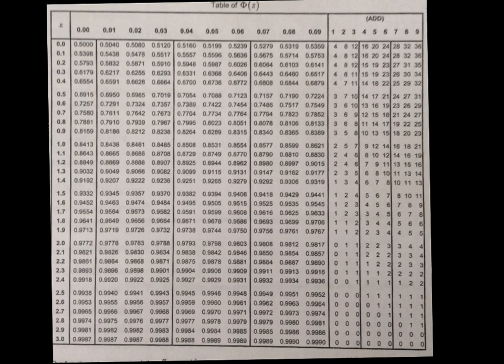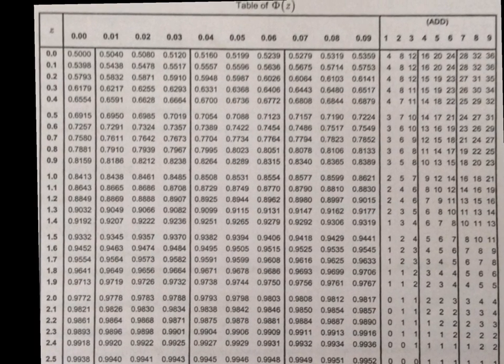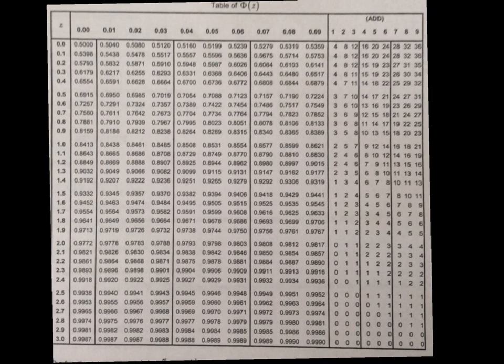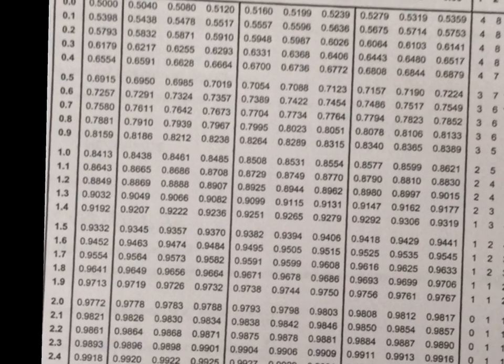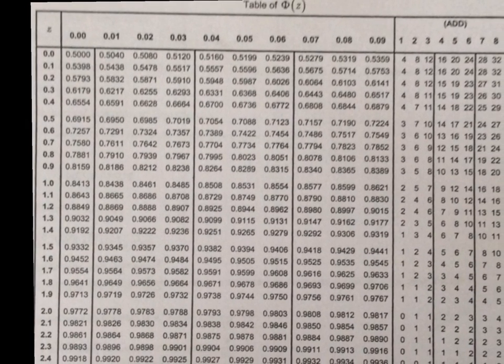So if I go to the normal distribution table, I'm trying to find 0.87 in this section. These are the areas. The closest I can get is 0.886.